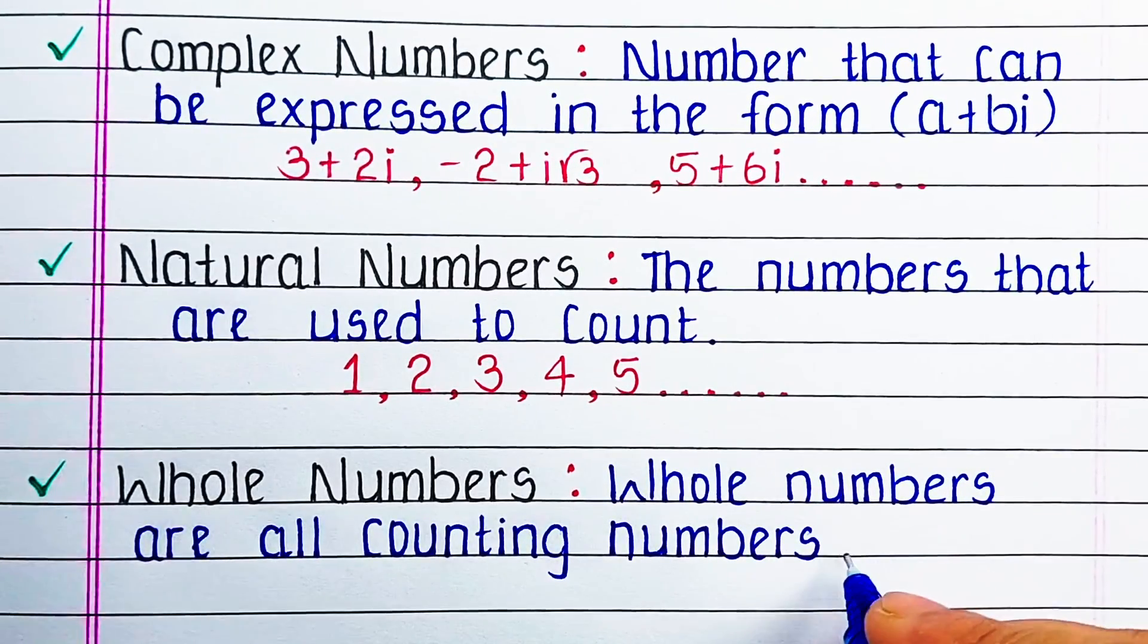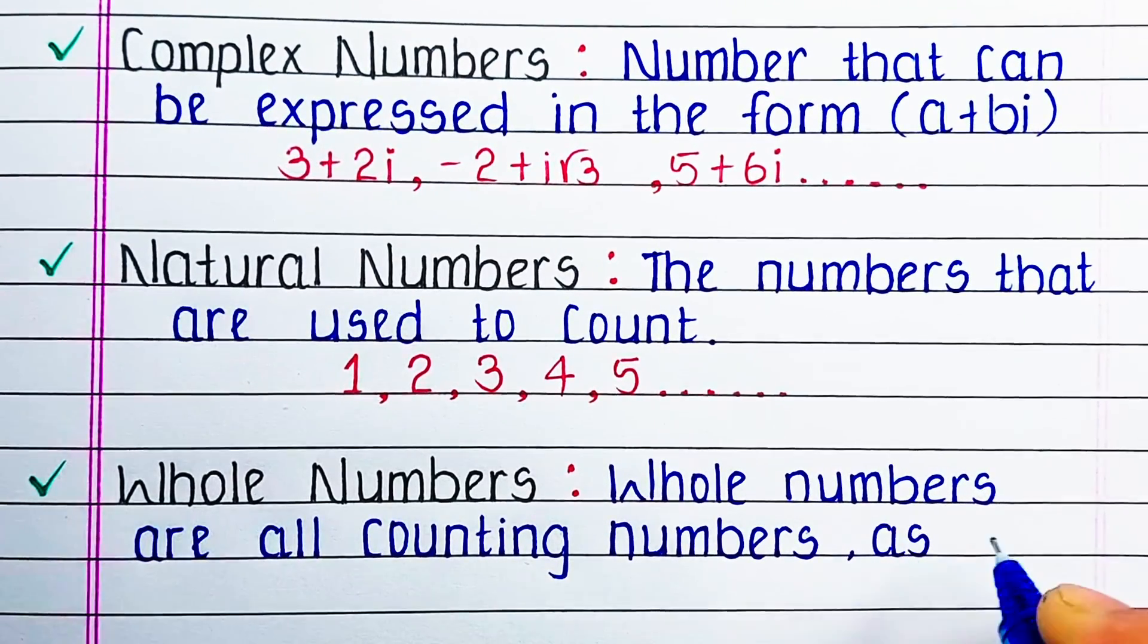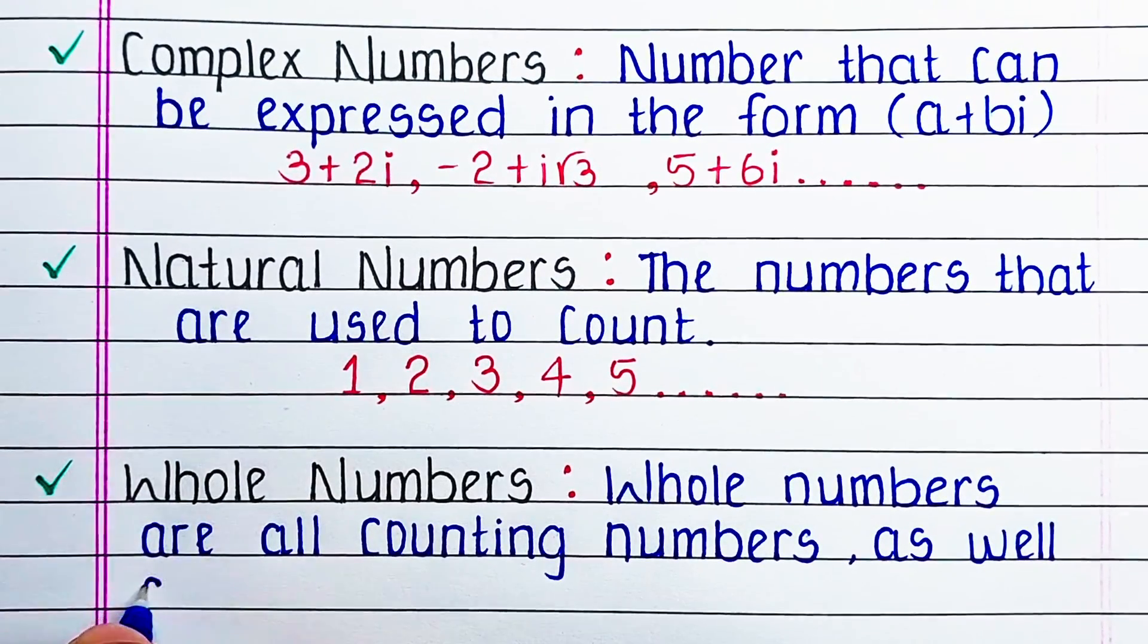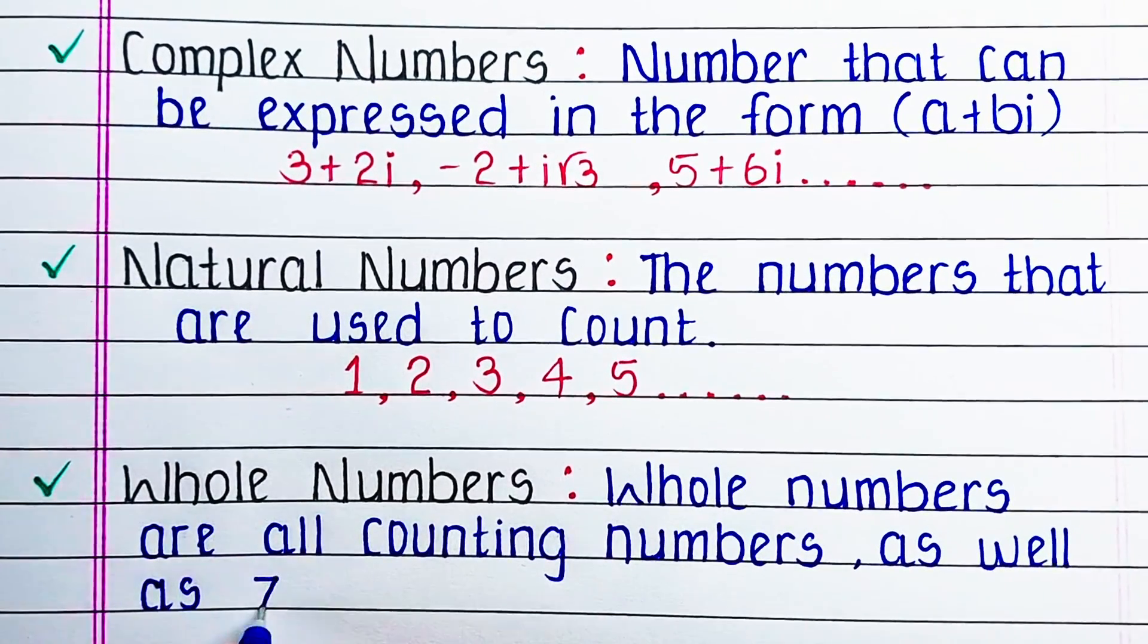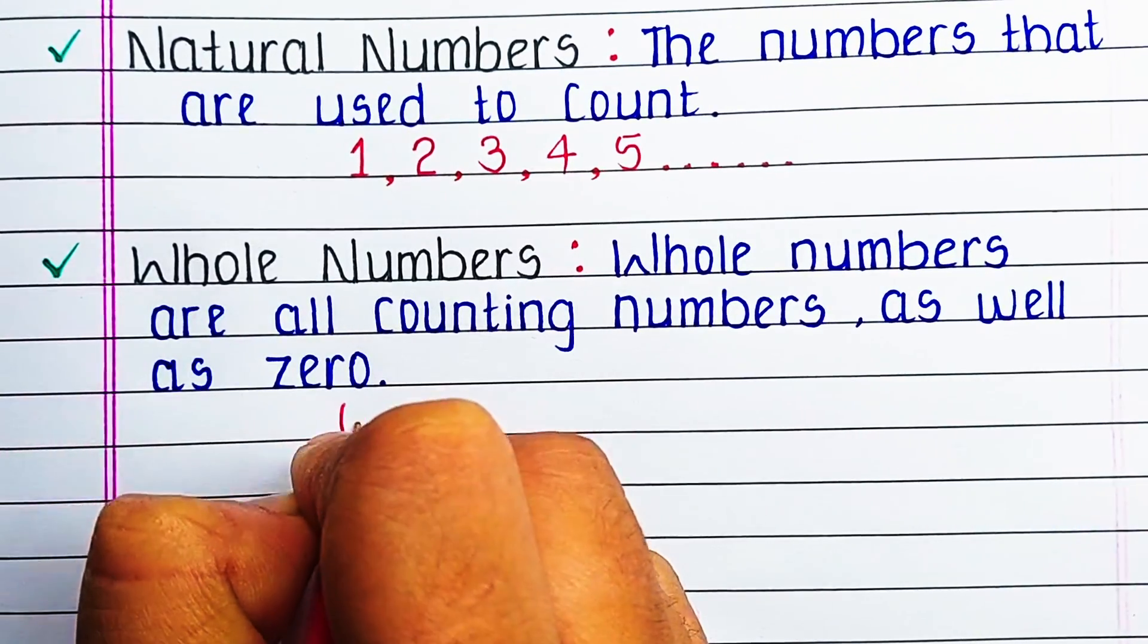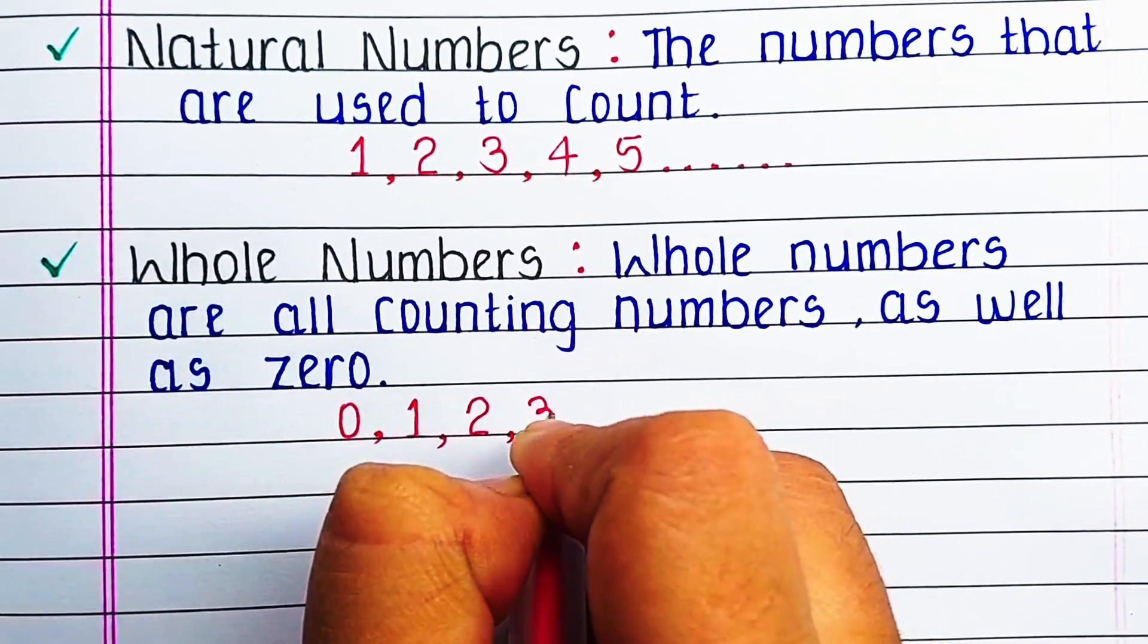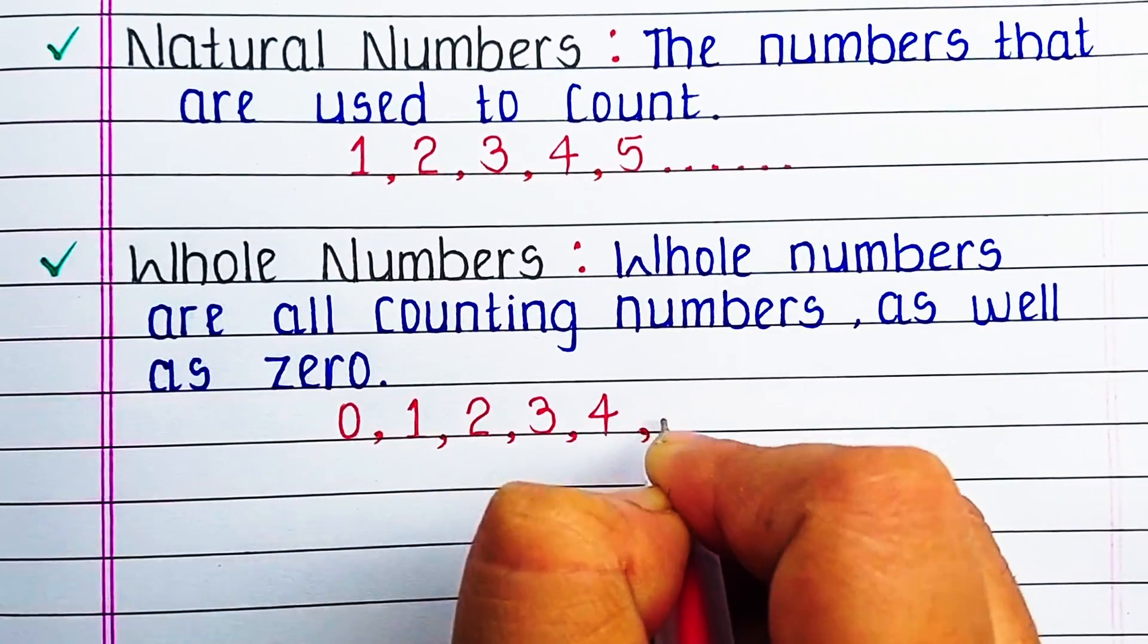Next is whole numbers. Whole numbers are all counting numbers as well as 0. That means whole numbers are the set of natural numbers plus 0. So we will start from 0, 1, 2, 3, 4, 5 and so on.